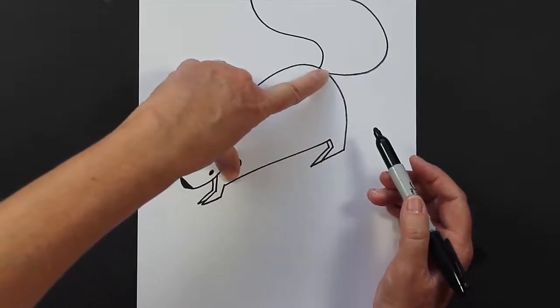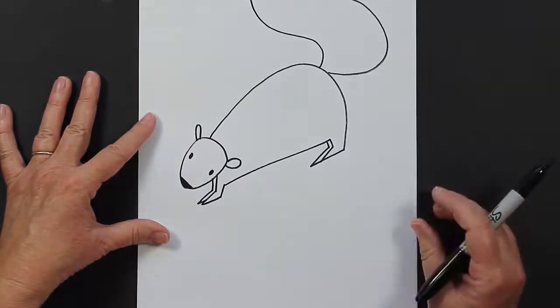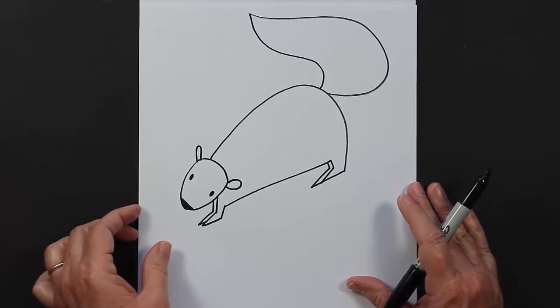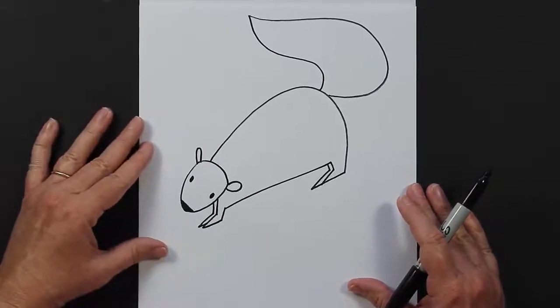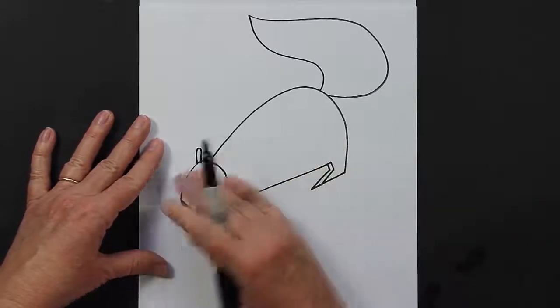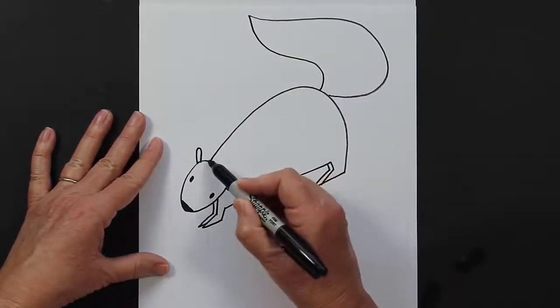I think he looks pretty cute so far. What's he missing? Let me move my paper down a little. He is missing his little stripe. So let's start with this stripe. Skunks are black and then they have a white stripe coming down the middle, so let's make a stripe on his head.